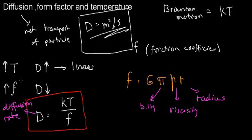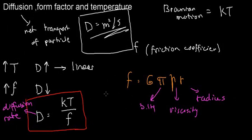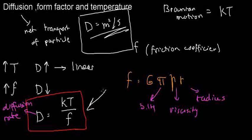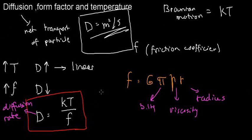So now we know: diffusion rate goes down when the form factor goes up, and diffusion rate goes up when temperature goes up. Hopefully you've understood this equation rather than just memorized it — and if so, I was happy to help. I'll see you in the next video.